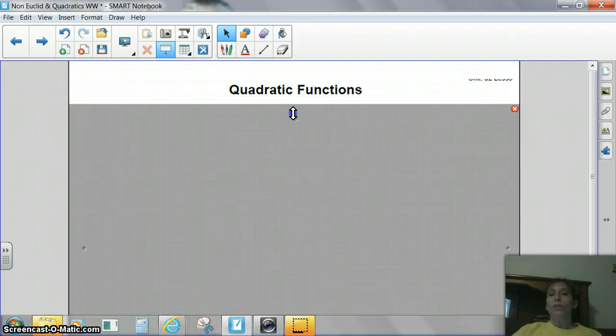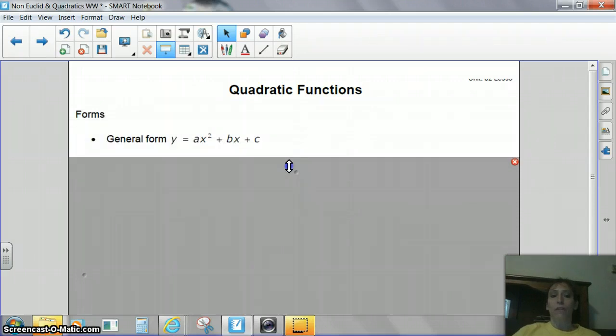All right. Quadratic function is actually a different type of function than what we've been talking about. We've been talking about linear in our classroom, and we've talked about the slope and how you know if it's positive or negative and those kind of things. But we're going to do a little changing, and we're going to talk about quadratic function. All right. So, first of all, this is the general form. It's y = ax² + bx + c.